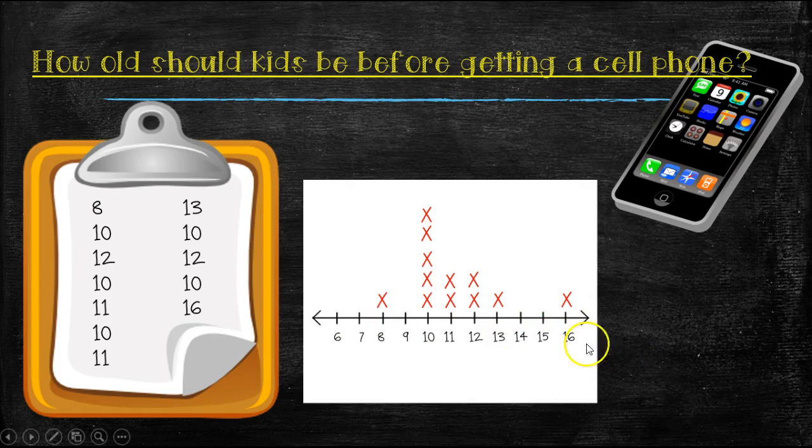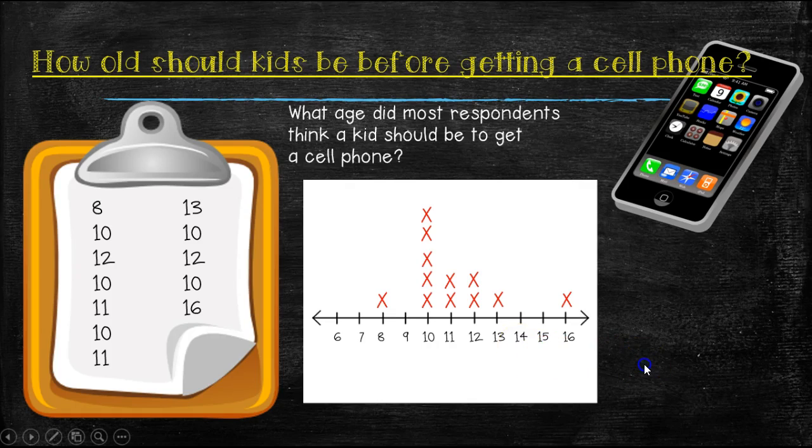So now we have a pretty good line plot that can tell us a lot of questions just easily by glancing. But first question is, what age did most respondents think a kid should be able to get a cell phone? What do you think? Most people thought the best age for kids to get a cell phone, you're right, it would be 10. And it would be 10 because that's the one that was most frequently answered, has the most X's.